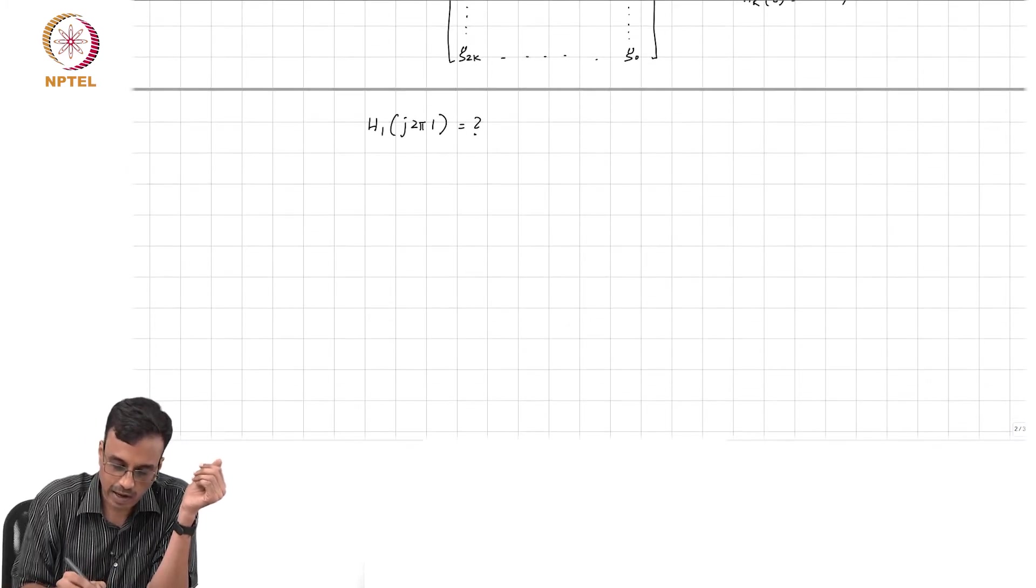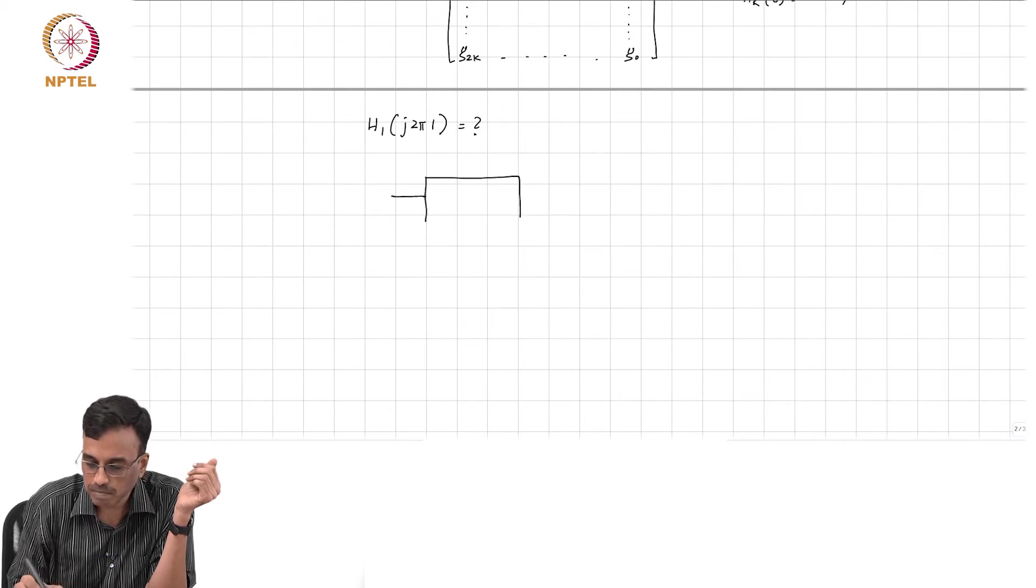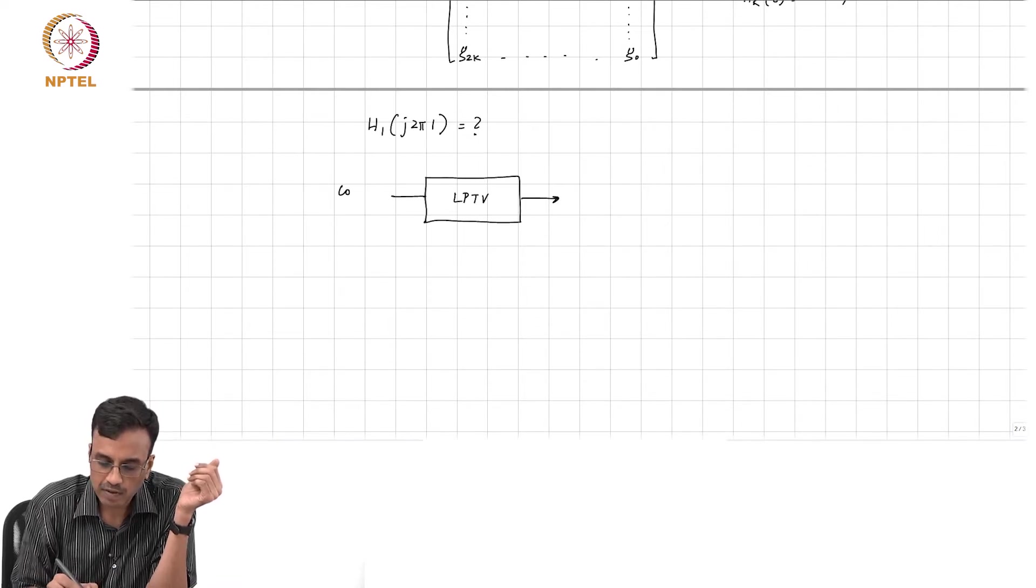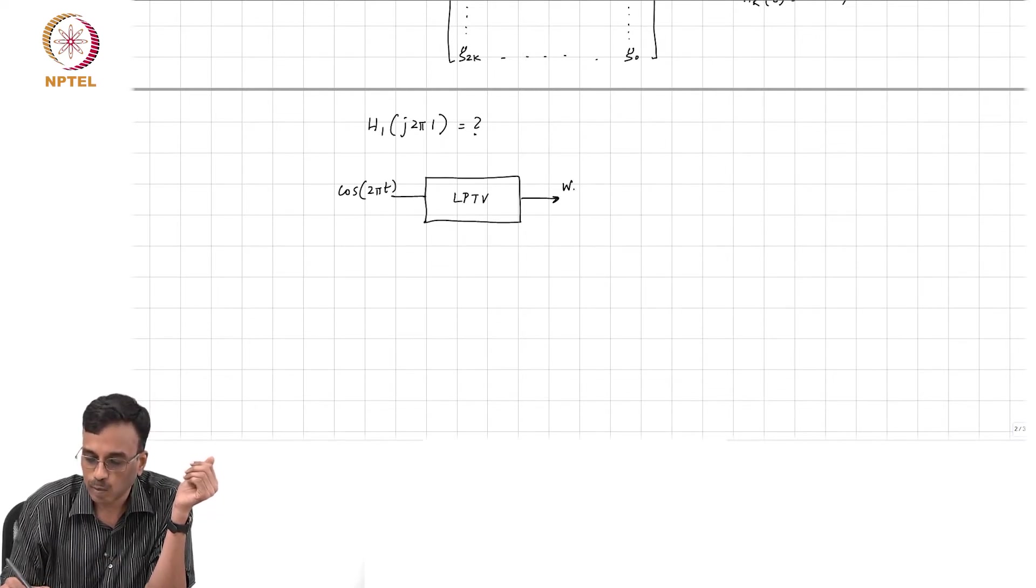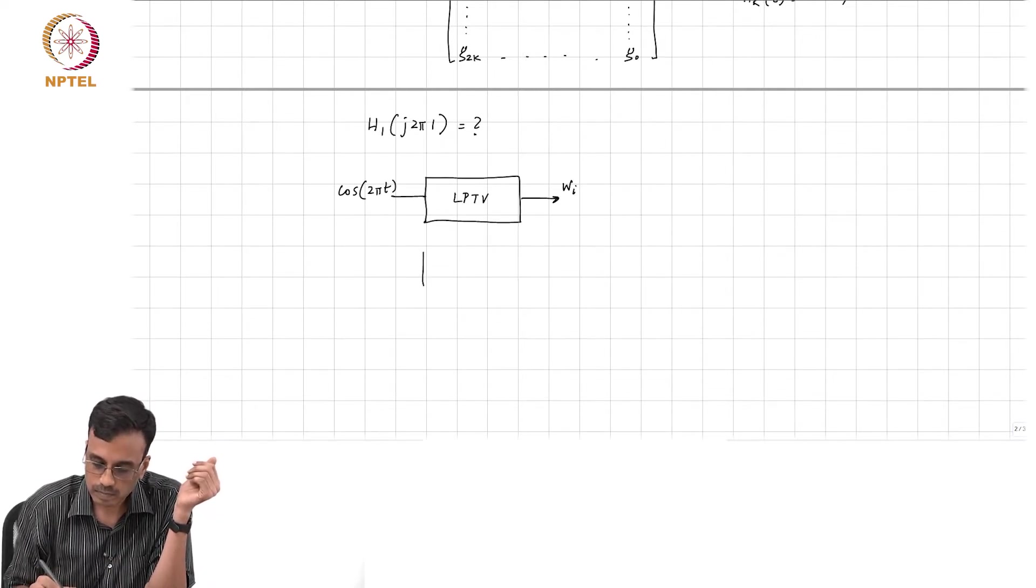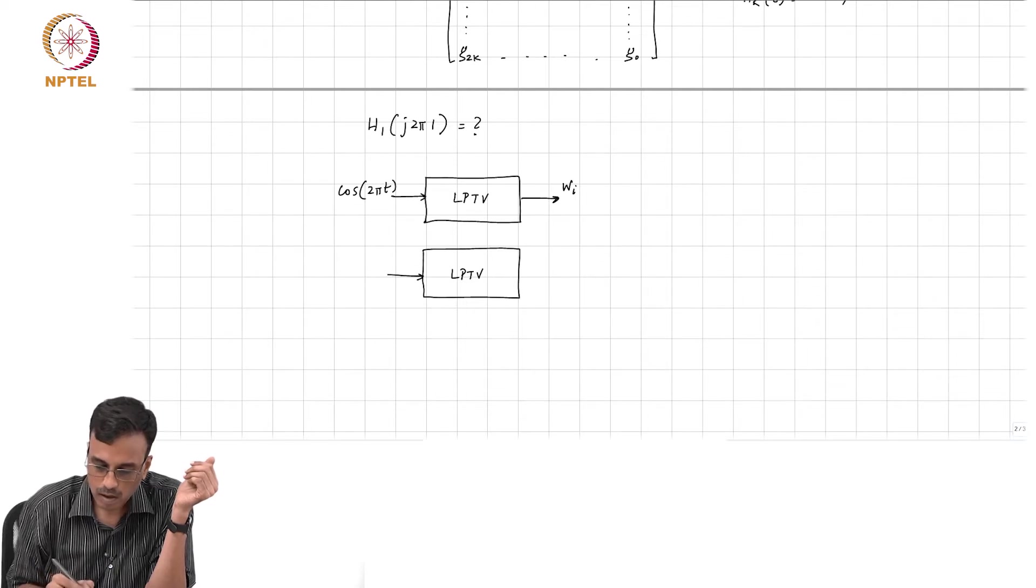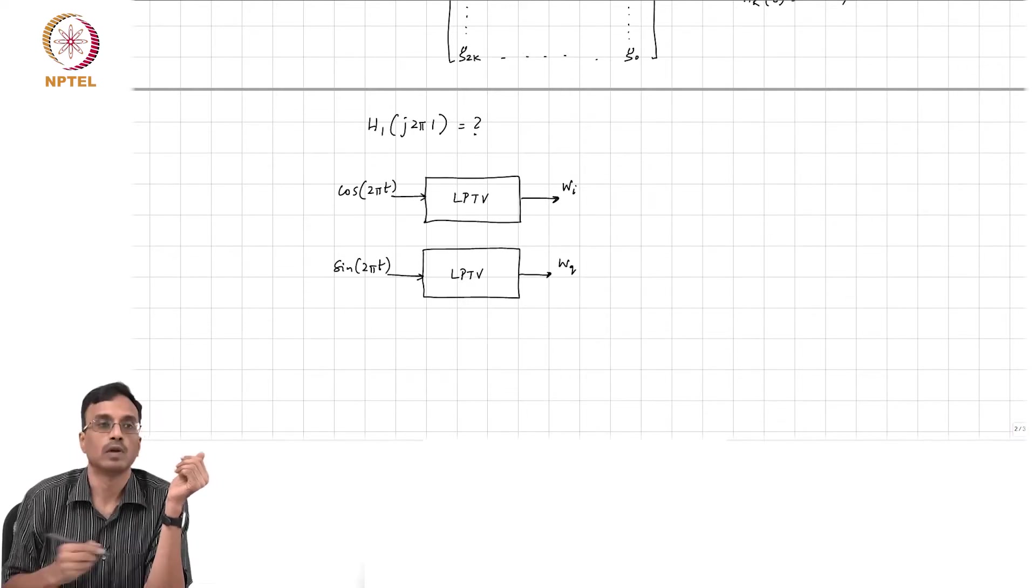We have already covered this extensively in class, so we do two experiments. We have this unknown system, right, and we give cos 2πt - you call this wᵢ. And then we have sin 2πt - you get wq, right.